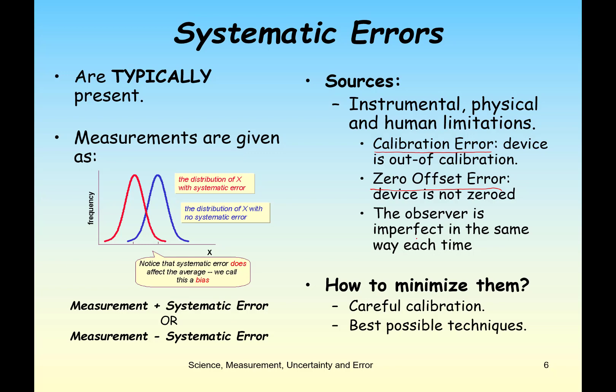Other sources include when an observer is imperfect in the same way each time, or our experiment is designed in a way that adds or subtracts from our measurement every time. Systematic errors cause our measurements to shift — if the blue distribution shows the true distribution, a systematic error shifts all our measurements. These errors cause us to measure too high or too low in the same way each time, so we reduce them by calibrating our instruments and making sure experiments are correctly designed.